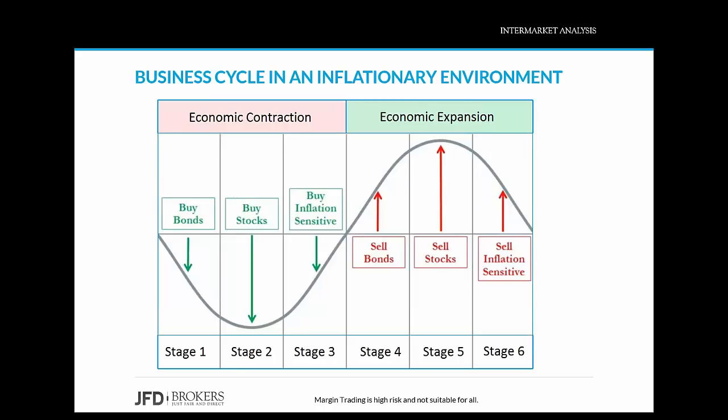Stocks anticipate the contraction phase by peaking before the end of the economic expansion. Commodities remain strong and peak after stocks, being held as a hedge against inflation. Stage six shows a deterioration in the economy as the business cycle prepares to move from an expansion phase to a contraction phase. Stocks have already been trading lower and commodities now start trending bearish in anticipation of decreased demand from the slowing economy.